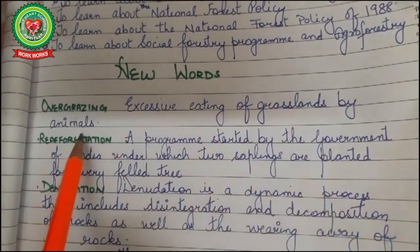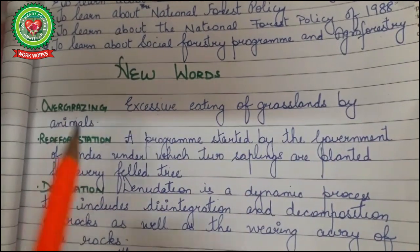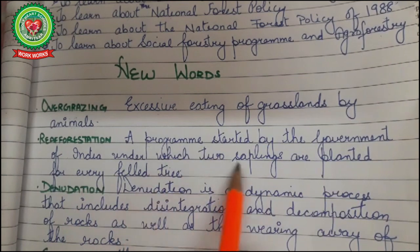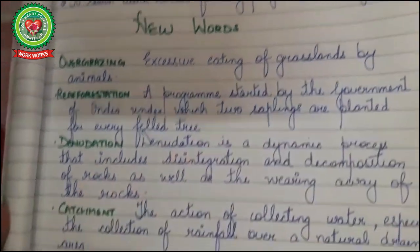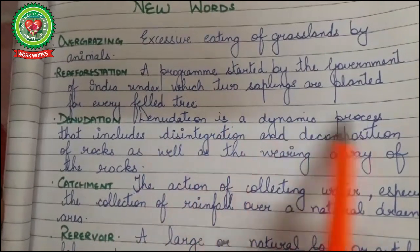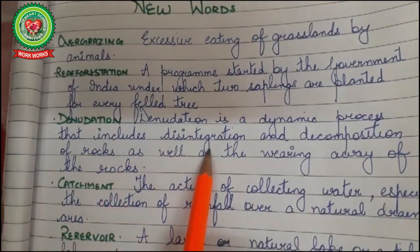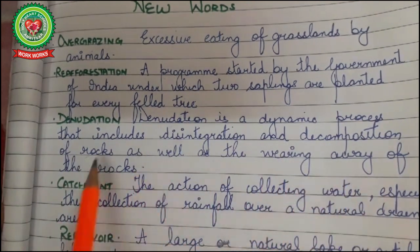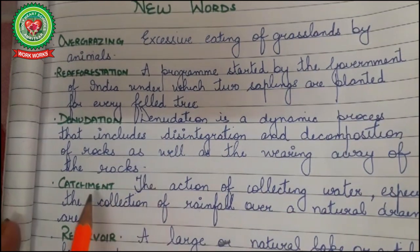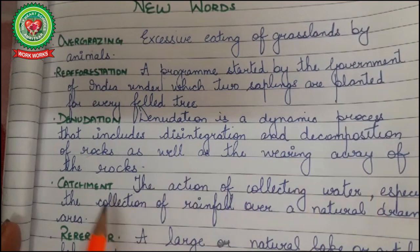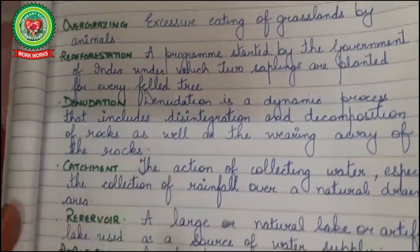Afforestation is a program started by the Government of India under which two saplings are planted for every felled tree. Denudation is a dynamic process that includes disintegration — meaning breaking — and decomposition of rocks, as well as the wearing away of rocks. Catchment refers to the action of collecting water, especially the collection of rainfall over a natural drainage area.